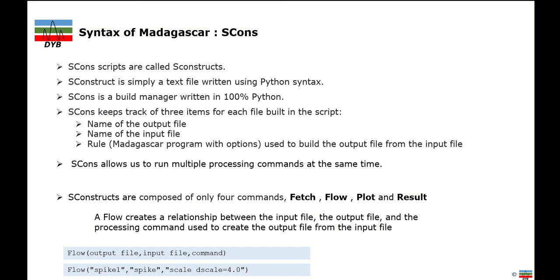SConstruct files are composed of only four commands: Fetch, Flow, Plot, and Result. The Fetch command is used to get a dataset from an internet source, a library, or a drive. The Flow command is the main command, consisting of your input, output, and process. The Plot command displays the output of a Flow. The Result command is used to save your Flow output. Plot and Result behave similarly, but Plot creates a VPL file while Result creates an RSF file.